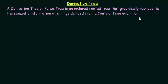In this lecture, we will be studying about derivation trees. A derivation tree or parse tree is an ordered rooted tree that graphically represents the semantic information of strings derived from a context free grammar. We have already studied about context free grammars, and this derivation tree is an ordered rooted tree that shows the graphical representation of how strings can be generated from a context free grammar. It is also known as a parse tree.